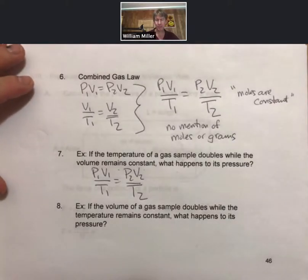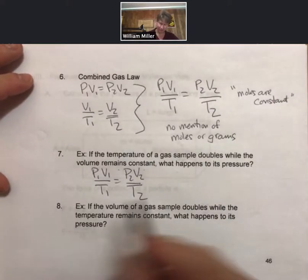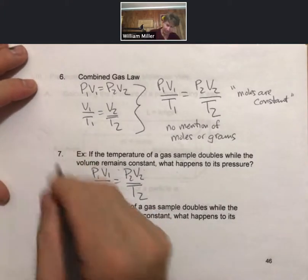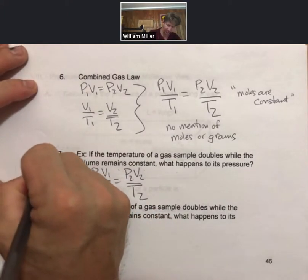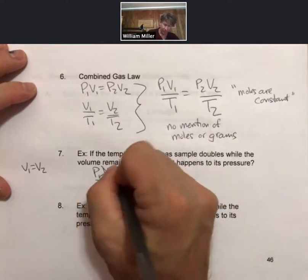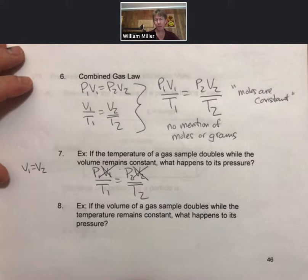Okay, so it says if the temperature, let's talk about the volume remains constant. So V1 equals V2, and when two things are equal we can cross them out of our equation. And now we're down to an easier thing to work with that says P1 over T1 equals P2 over T2.